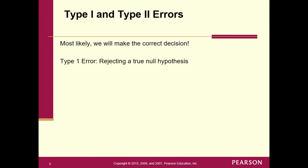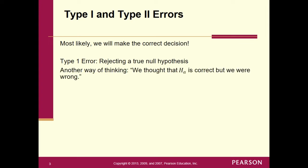A Type 1 error is rejecting a true null hypothesis. So we decided to reject the null, but it was actually true. Another way of thinking about it: we thought the alternative HA was correct, but we were wrong. I would learn this definition — rejecting a true null hypothesis for a Type 1 error — but maybe the easier way to think of it is in terms of the alternative, the researcher's hypothesis.